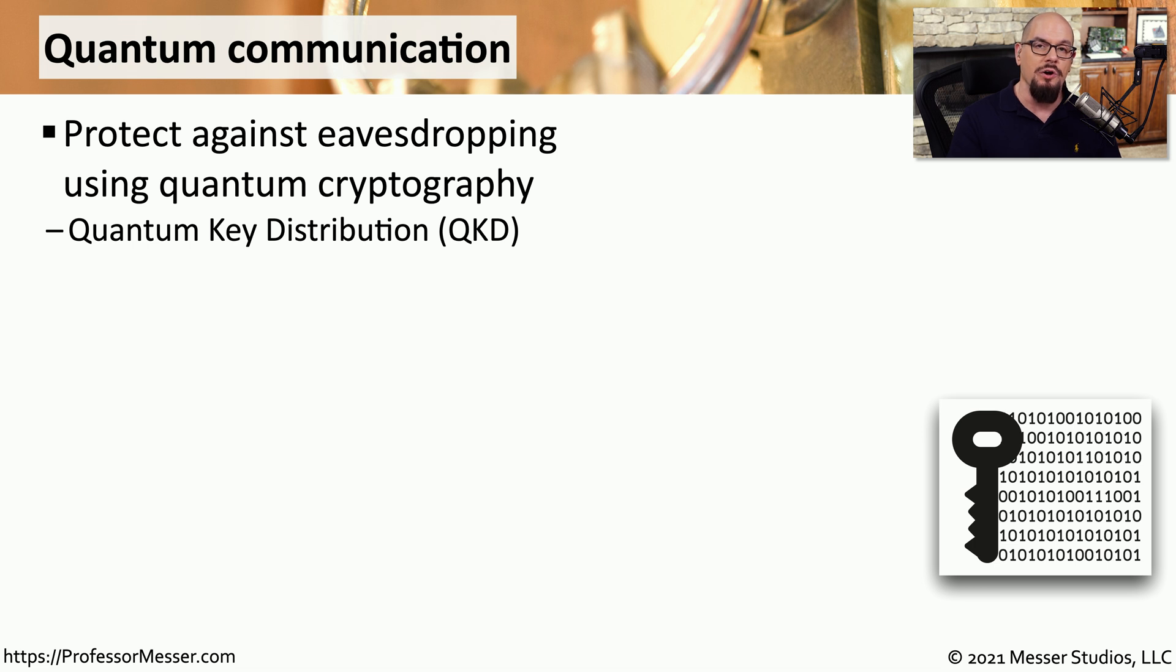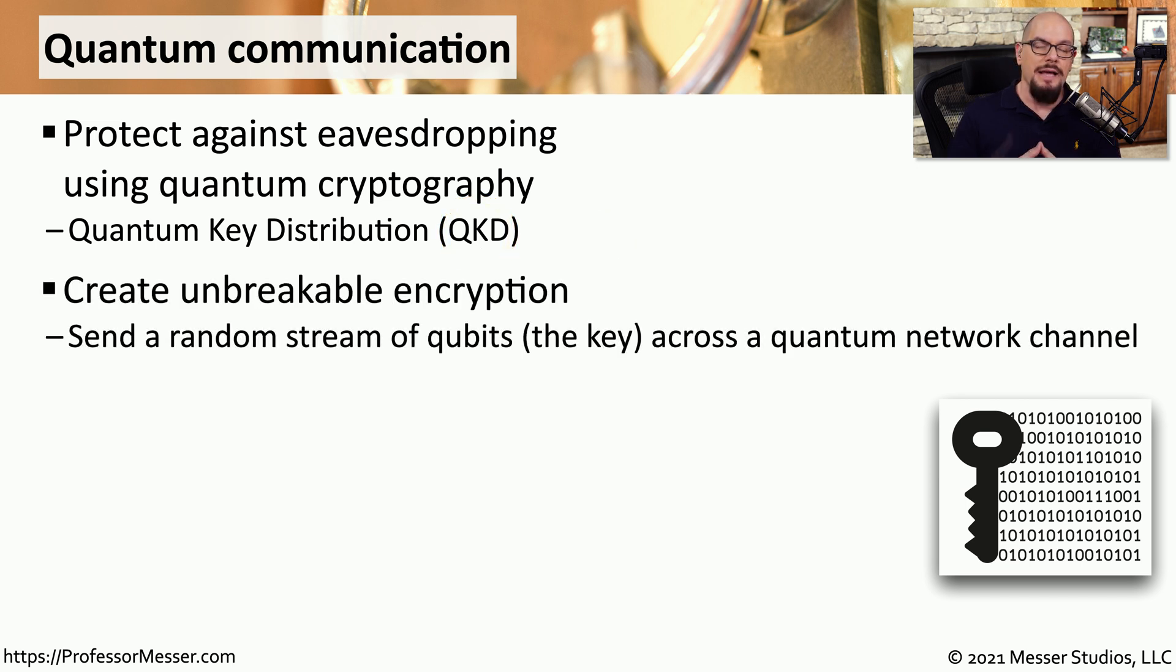This means that we can send information over a quantum network, and on the other side we're able to tell if anyone was monitoring that conversation. This is especially useful if you want to distribute encryption keys. You might want to use quantum key distribution, or QKD. This allows us to send our encryption keys across the network to the other side without the worry of someone being able to intercept that key somewhere in the middle. We would send that random string of qubits, which was effectively our encryption key, across that quantum network channel.